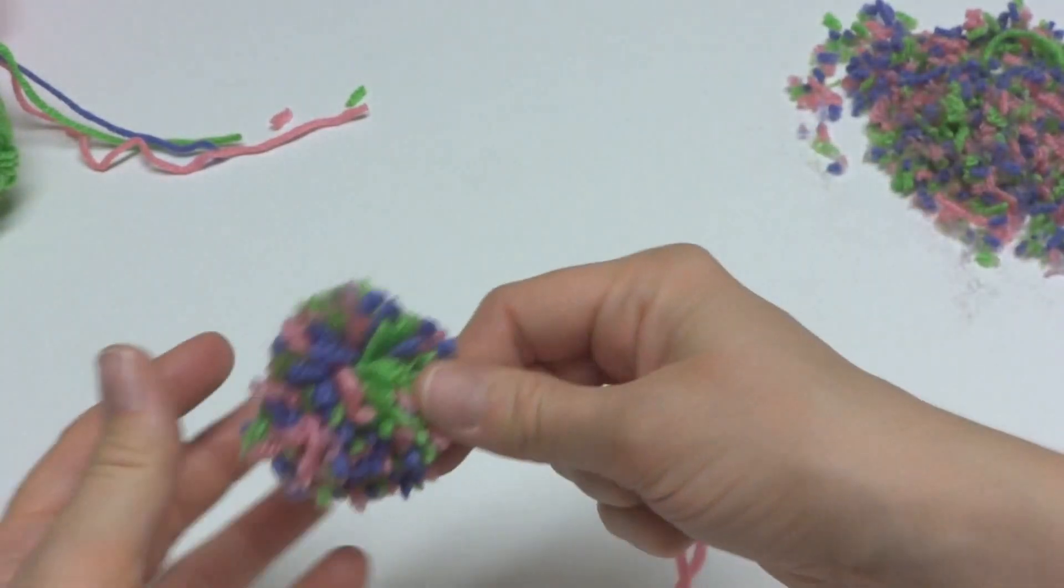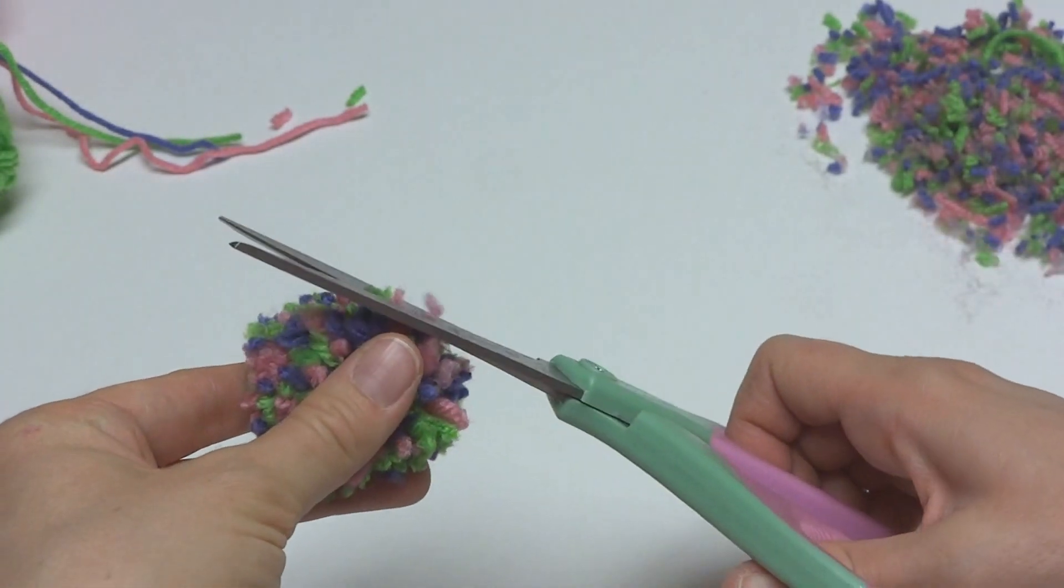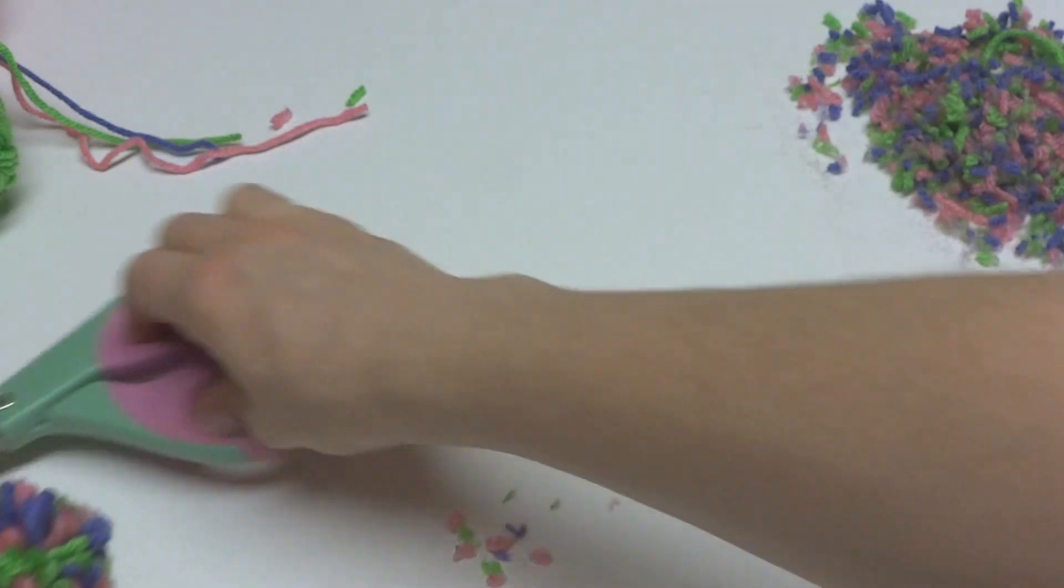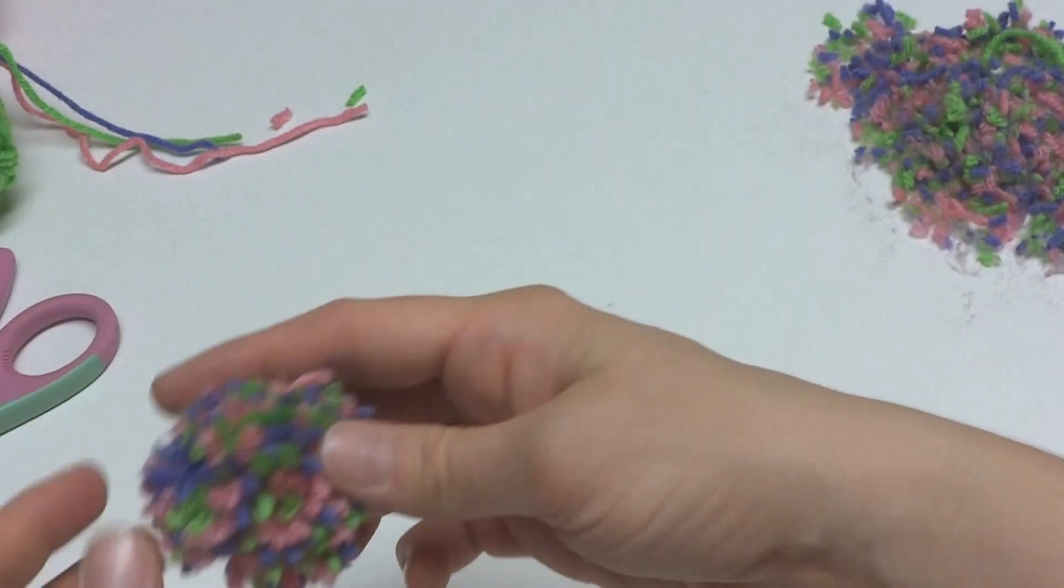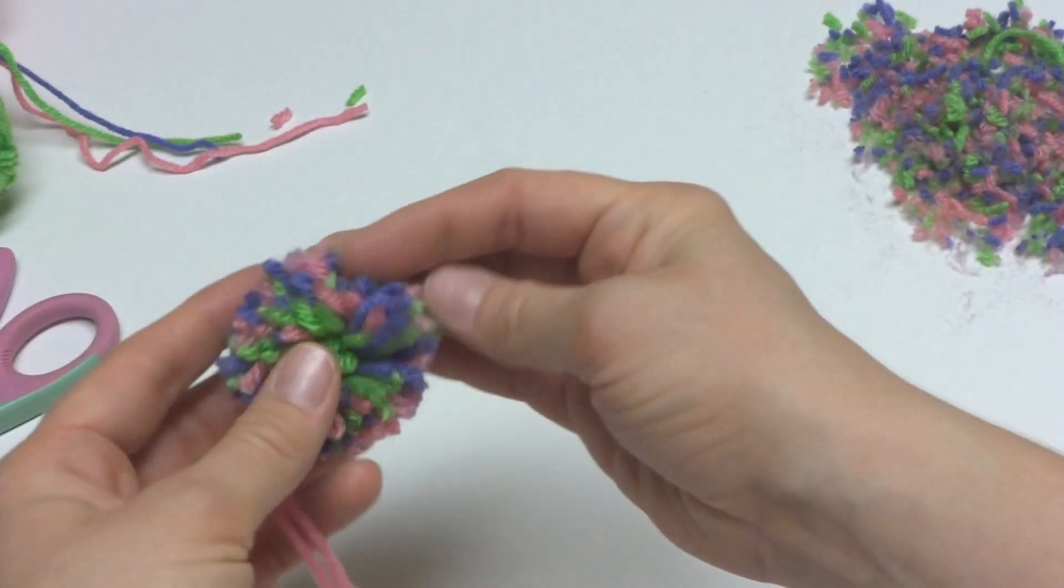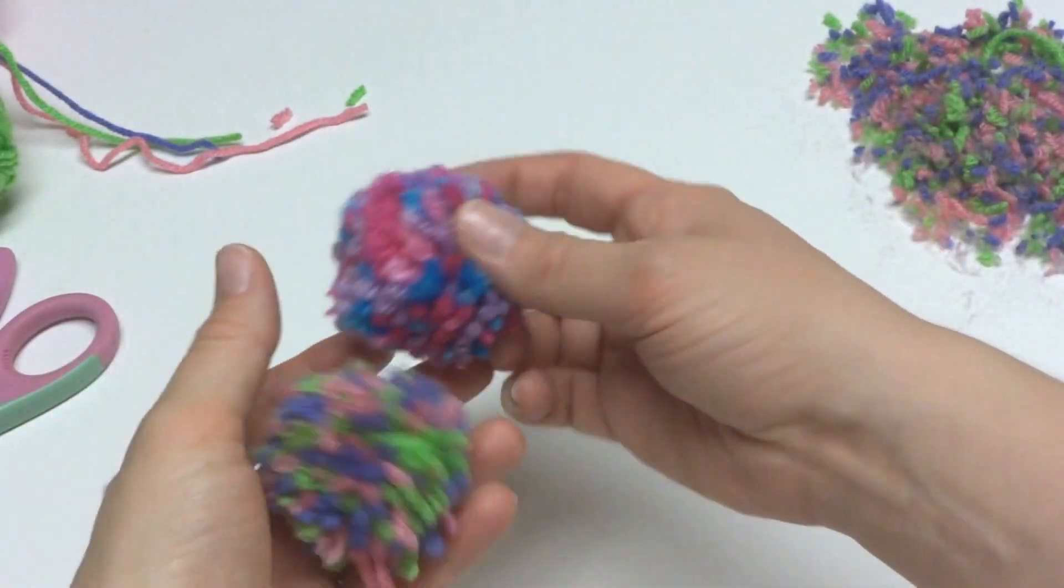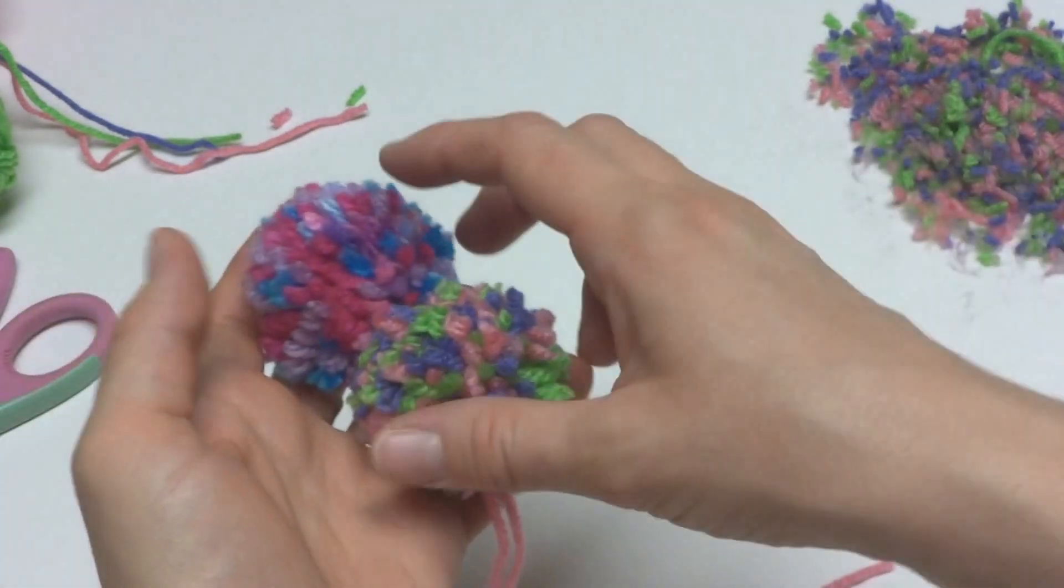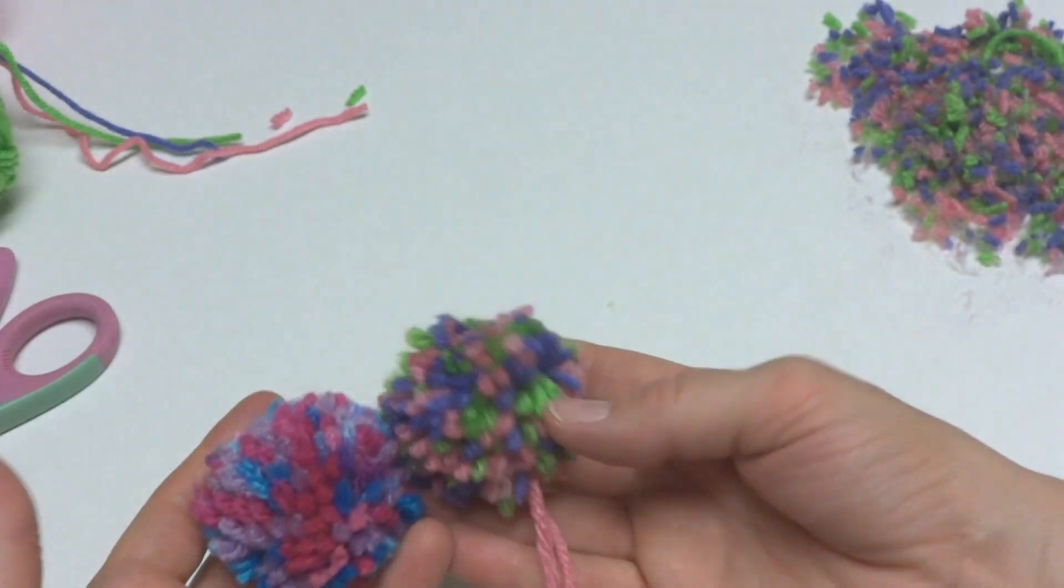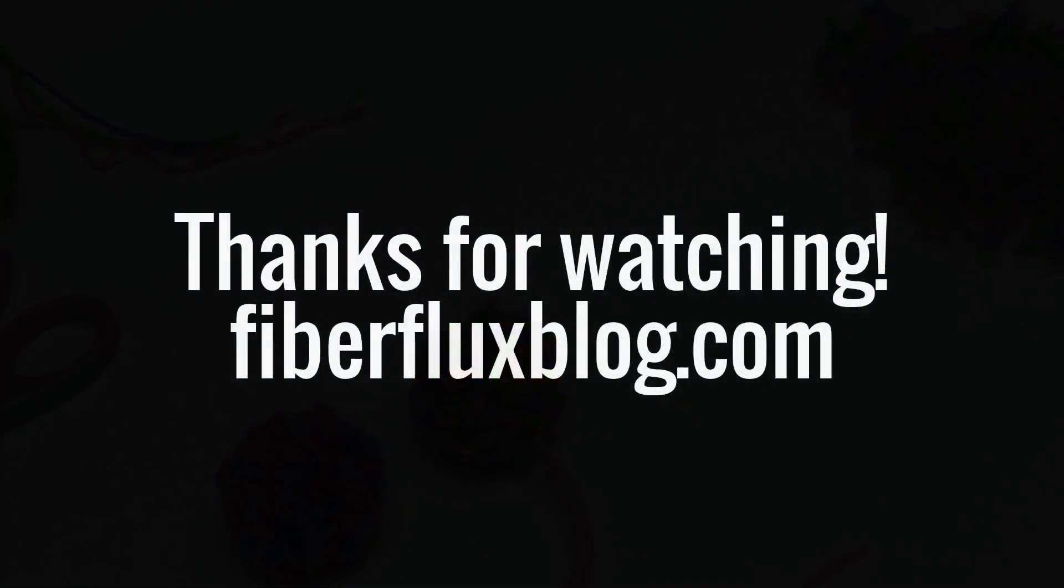So then we're left with our multi-color pom-pom. Notice a few there. So we're left with our multi-color pom-pom and again, if you trim these tails, you can glue it to something or whatever you want to do with it. So there you have it, a multi-color pom-pom. Thanks so much for watching and be sure and click the red subscribe button to get all the latest Fiber Flux video updates. Thanks again! Bye!